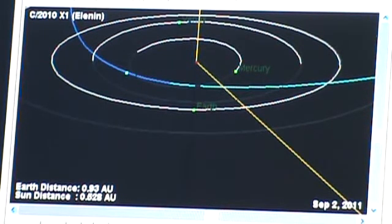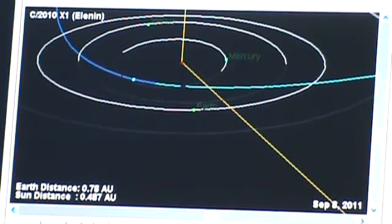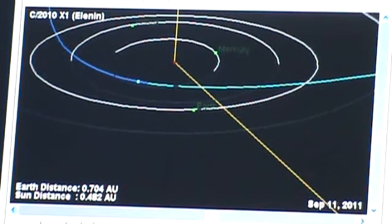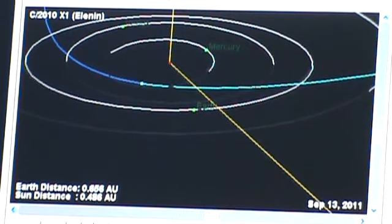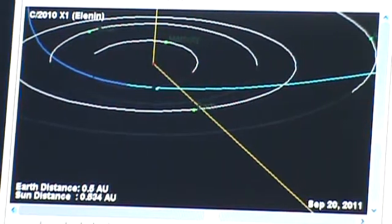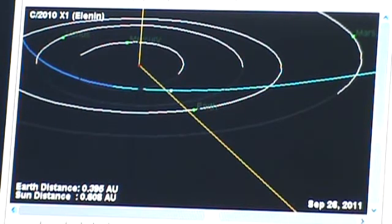As many of us know, on September 11th, which is just a few days away, this object apparently will be closest to the Sun. And at that time, it's speculated that there may be great solar activity. Then on September 26th, there's an alignment. Many speculate that that will cause cataclysmic changes on the Earth.